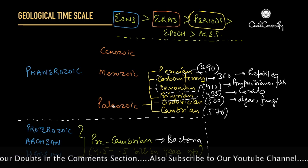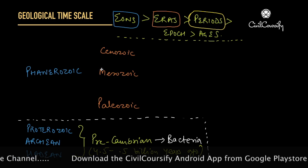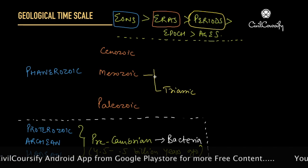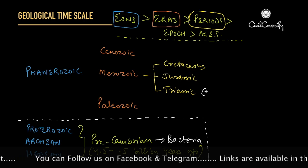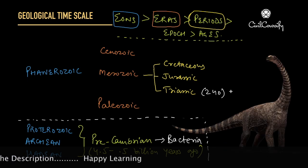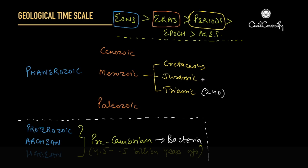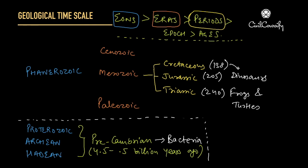Now we look at the Mesozoic era, which is divided into three periods: the oldest is the Triassic period, then the Jurassic period, and the latest is the Cretaceous period. The Triassic period started roughly about 240 million years ago, and frogs and turtles emerged for the first time here; dinosaurs also emerged in the Triassic period but were predominant in the Jurassic period — a very famous name you'll remember from the Jurassic Park movie. The Jurassic period started 205 million years ago. The Cretaceous period started roughly about 138 million years ago and is famous for the extinction of dinosaurs.